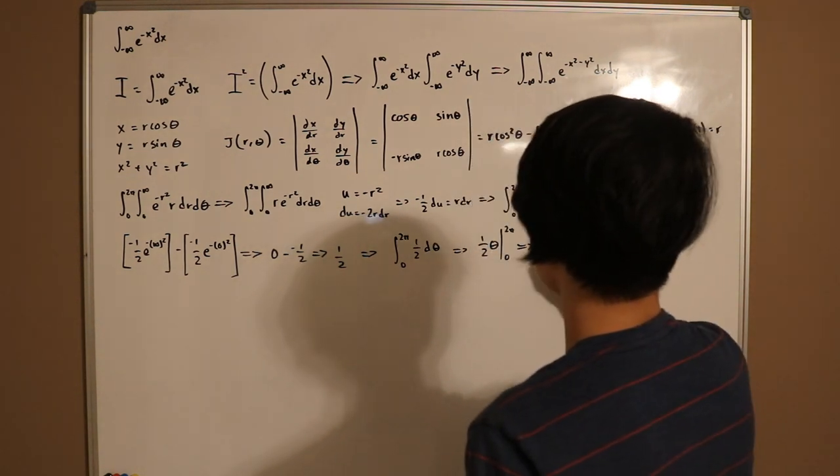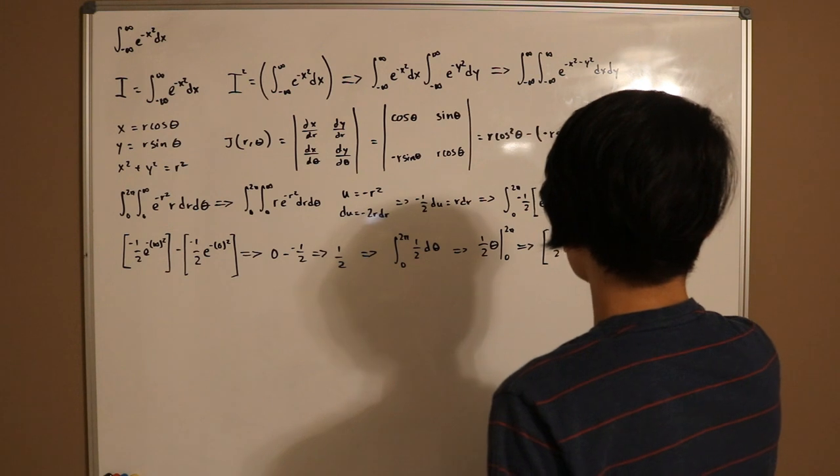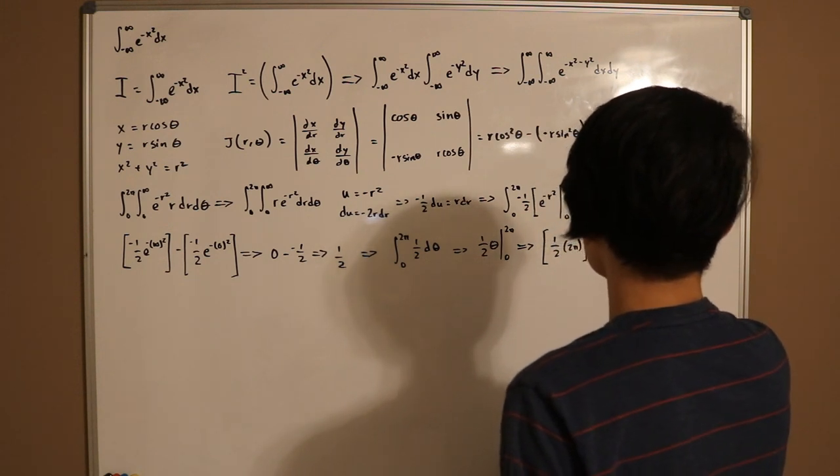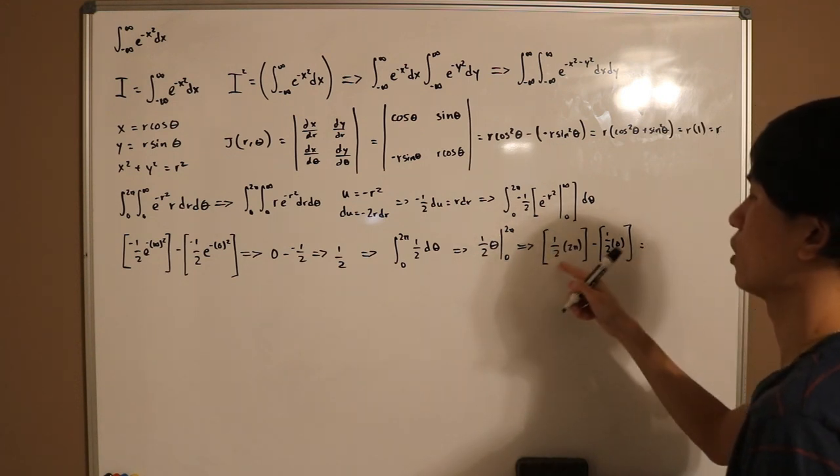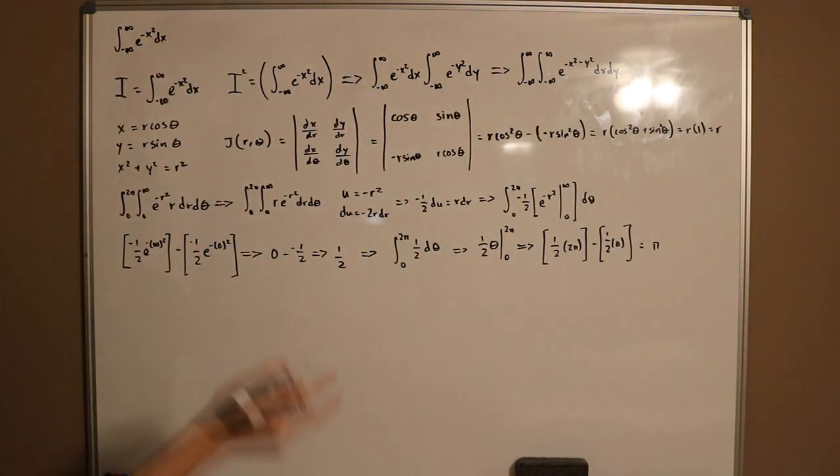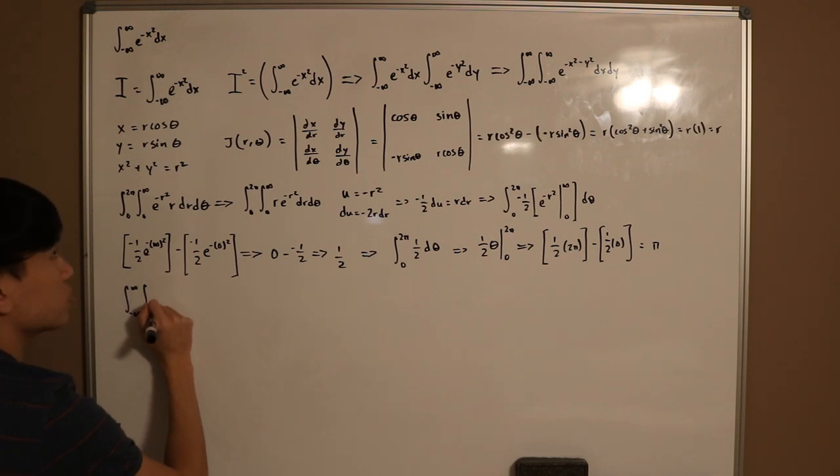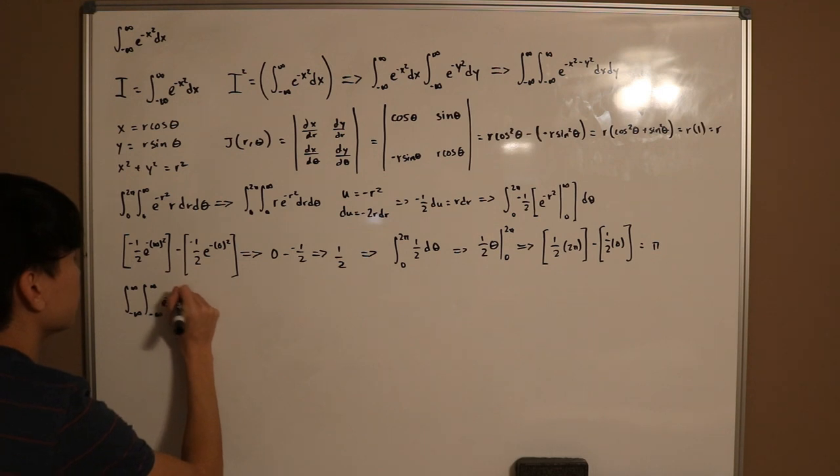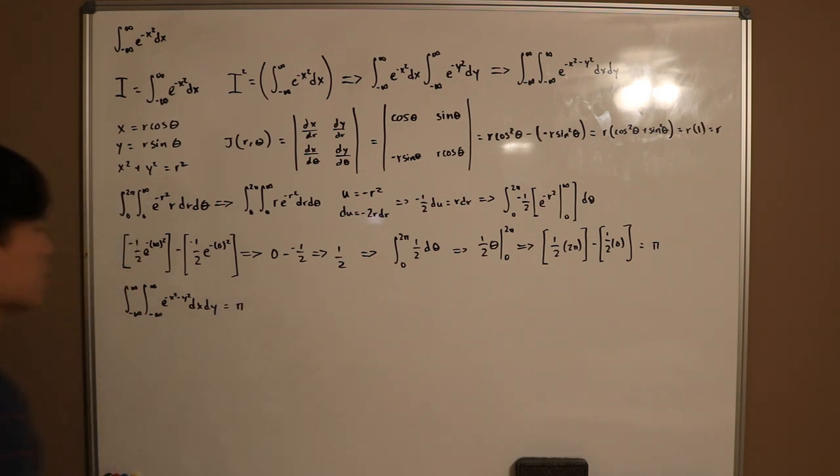And now we just fill back our new integral. So zero to two pi of positive one half d theta. And this is pretty straightforward. It's just a constant. You're integrating in terms of theta. It just comes down to one half theta from zero to two pi. And just plug in your bounds. So it's one half times two pi, then subtract one half times zero. This is just zero. And then this is just two pi divided by two, so pi. So we get that this double integral, negative infinity to infinity of e to the negative x squared minus y squared dx dy, which is equal to pi.